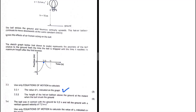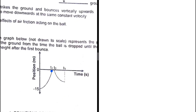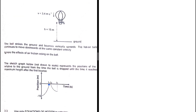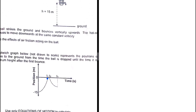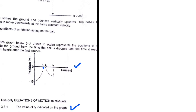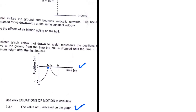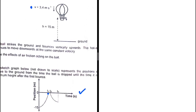Use only equations of motion to calculate the value of t1 indicated on the graph. We have a hot air balloon which is moving downwards with a constant velocity of 3.4 meters per second. A ball is dropped with an initial velocity of 0 meters per second, then it strikes the ground and bounces. This position-time graph is for the motion of the ball. t1 is the time taken for the ball from the instant it is dropped until it strikes the ground.